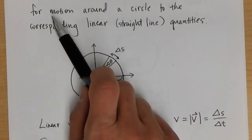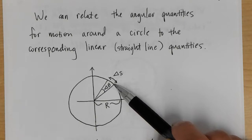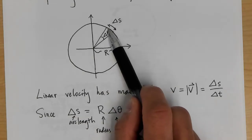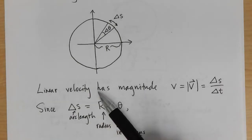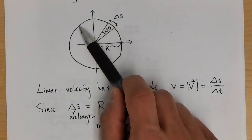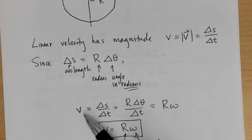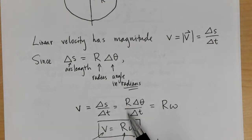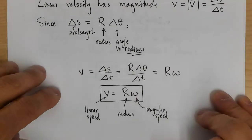We can relate angular and linear quantities. Arc length ΔS = R·Δθ. The linear speed V = ΔS/Δt = R·(Δθ/Δt) = R·ω. So the linear speed around a circle equals the radius times the angular speed.